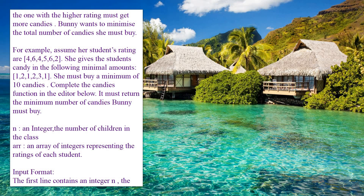The third child has rating 4, which is less than the second child's rating, so she gives one candy. The fourth child has rating 5, which is more than 4, so she gives two candies. The fifth child has rating 6, higher than 5, so she gives three candies. The sixth child has rating 2, lower performance, and since the minimum is one, she gives one candy.